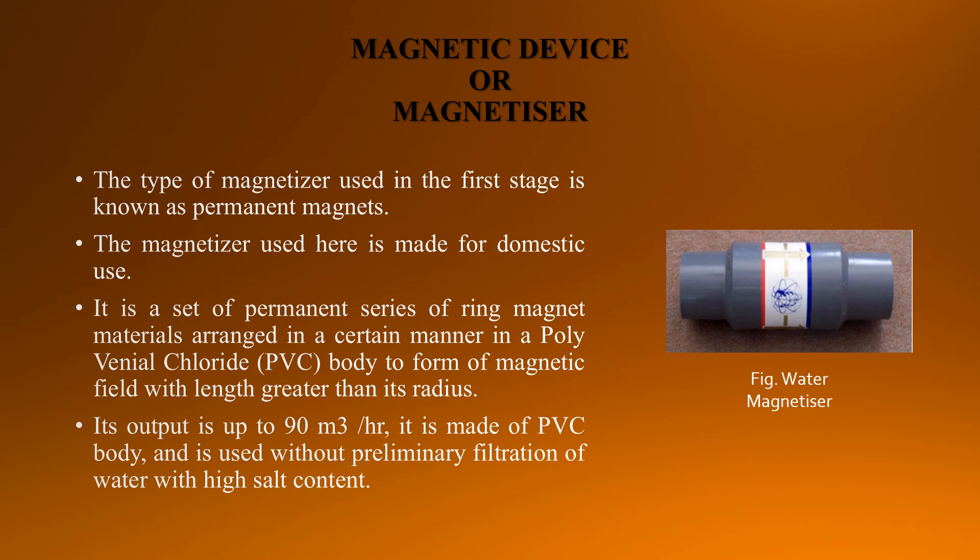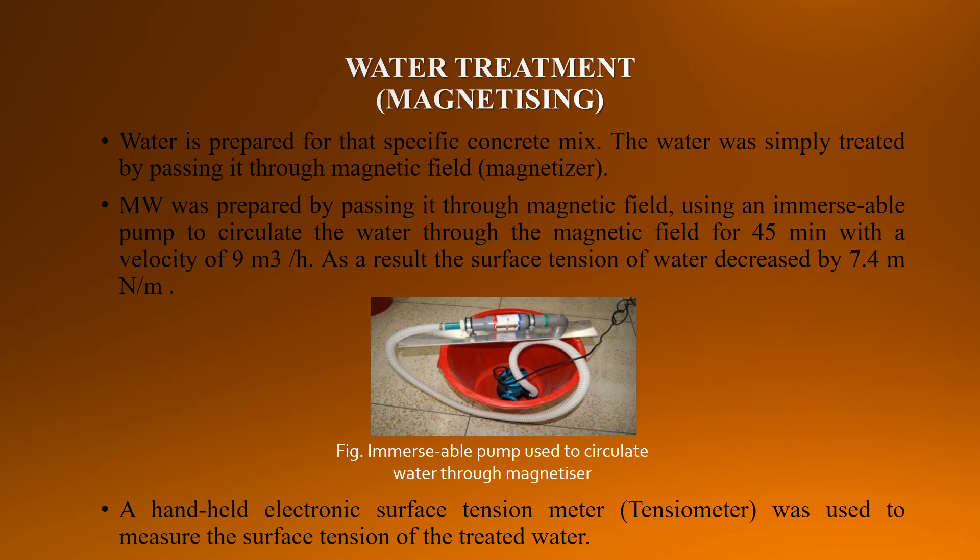Regarding the magnetic device or magnetizer: the type used in the first stage is known as a permanent magnet, made for domestic use. It is a set of permanent series of ring magnet material arranged in a certain manner in a polyvinyl chloride body to form a magnetic field with length greater than its radius. Its output is up to 90 cubic meters per hour. It is made of a PVC body and is used without preliminary filtration of water with high salt content. An immersible pump is used to circulate water through the magnetizer, and a handheld electronic surface tension meter was used to measure the surface tension of the treated water.